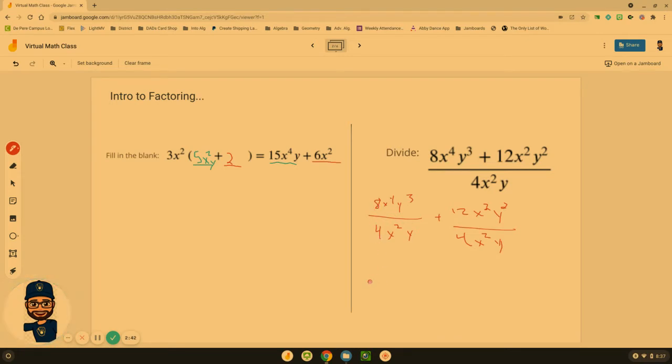What's 8 divided by 4? Well that's 2. x to the fourth divided by x². If I cancel them out that would leave me with 2 on the top. y to the third divided by y is y² plus 12 divided by 4 is 3. x² divided by x² is 1. They cancel each other out and y² over y is y.